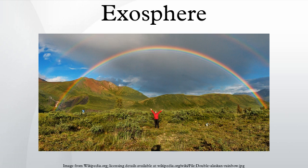The lower boundary of the exosphere is called the exobase. It is also called exopause and critical altitude, as this is the altitude where barometric conditions no longer apply. Atmospheric temperature becomes nearly constant above this altitude. On Earth, the altitude of the exobase ranges from about 500 to 1,000 kilometers depending on solar activity. The exobase can be defined as the height at which upward-traveling molecules experience one collision on average, where the mean free path of a molecule equals one pressure scale height.